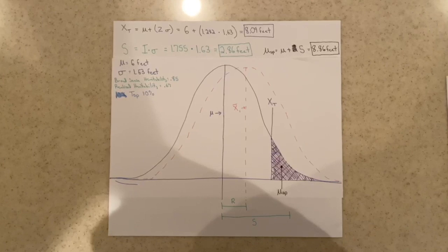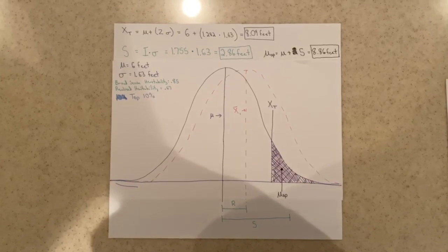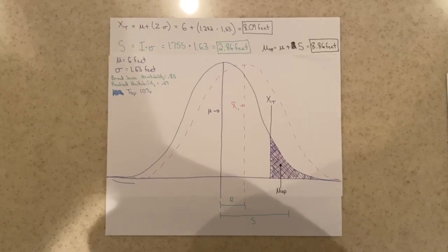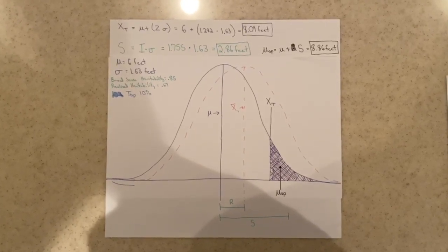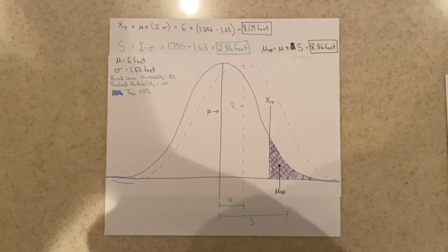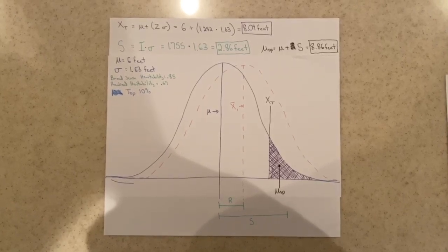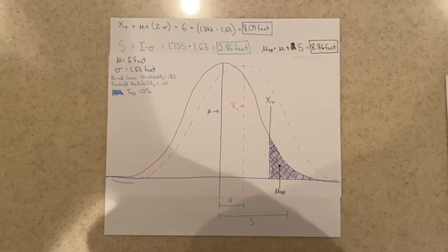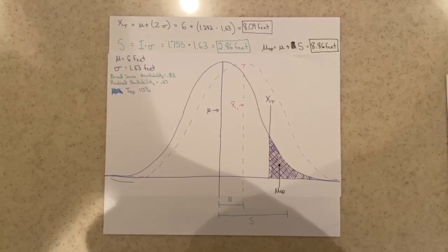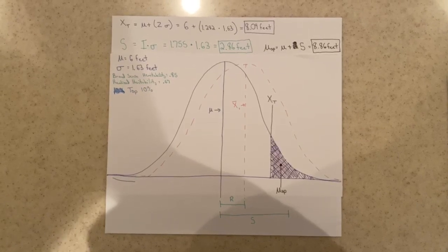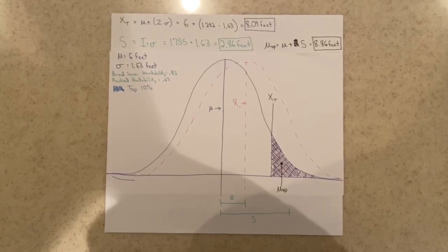We can also take another value from the same table — the selection intensity, or I — and multiply it with the standard deviation to find the selection differential, which is the distance from the current mean population and the mean feather length of the selected parents from the breeding.